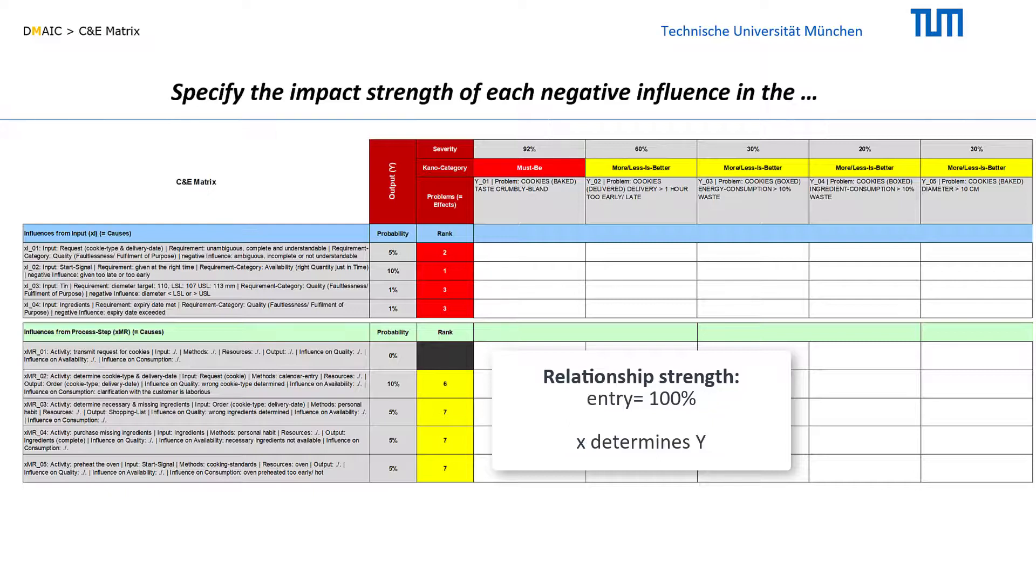In the other extreme, an influence strength of 100% means that the occurrence of an influence completely triggers the occurrence of the problem, or at least always leads to increasing the problem. Thus, the strength of the X-Y relationship can vary between 0 and 100%.